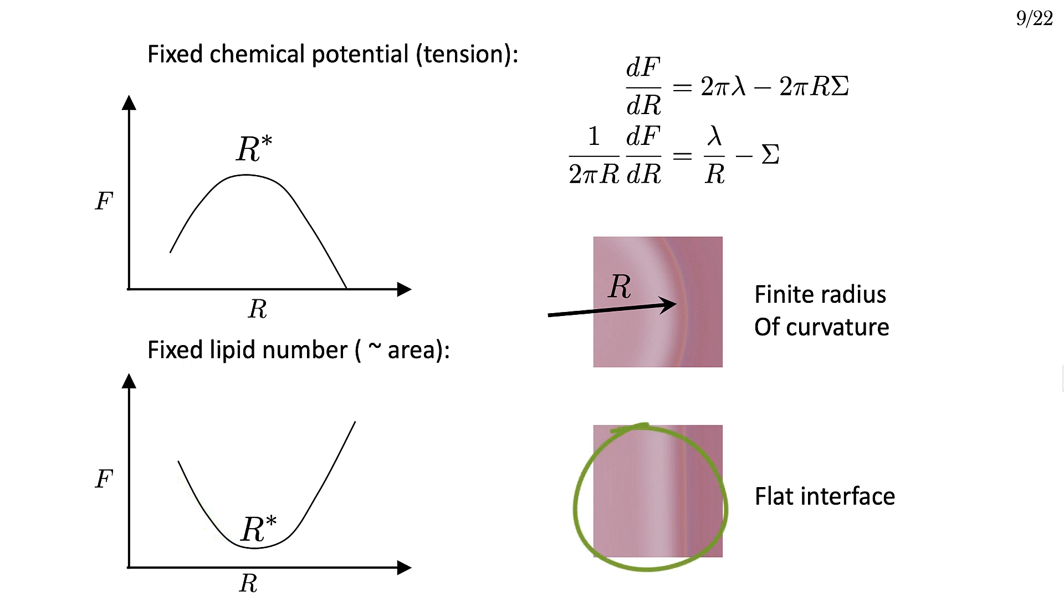One last thing that I want to mention is the case of a flat interface where the radius of curvature is infinite. In this case, the interface just moves until the tension is zero. You can see this from the force-free condition itself, just plug in r equals infinity, or consider that changing the position of the interface doesn't change the line tension contribution to the free energy, and thus there's a net force of sigma on the interface. So as long as sigma is finite, it continues to move.